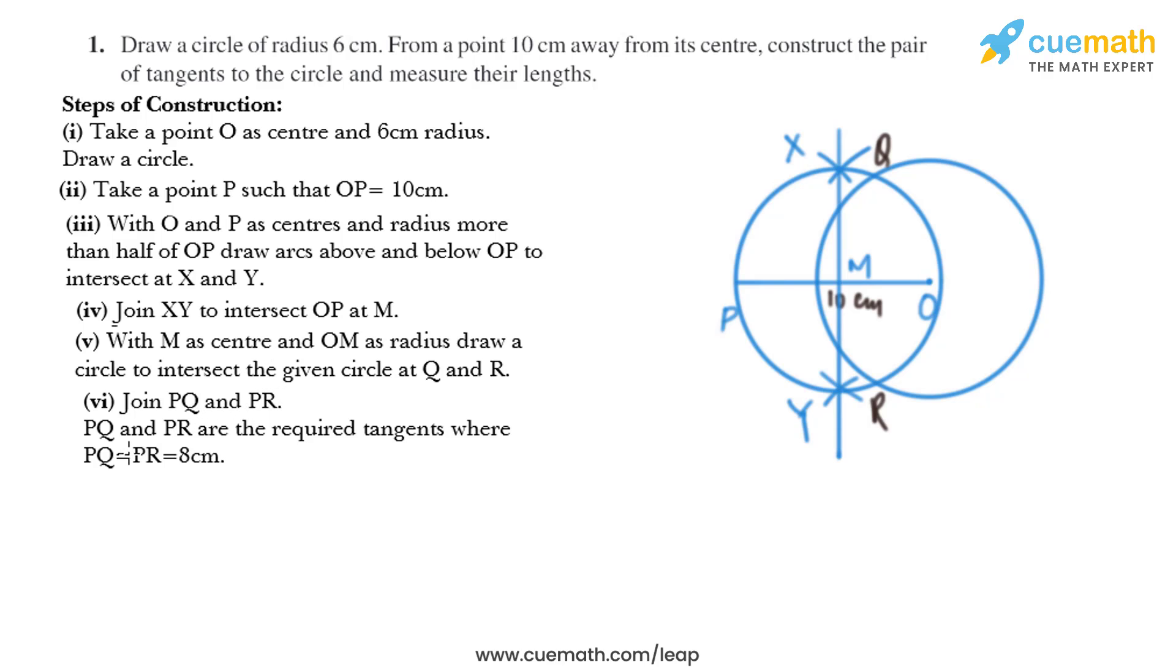Now in the next step, join PQ and PR. PQ and PR are the required tangents where PQ equals 8 centimeter. So we just need to join P to Q and P to R. So PQ and PR both are 8 centimeter.